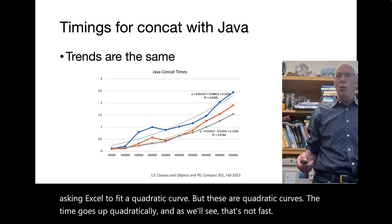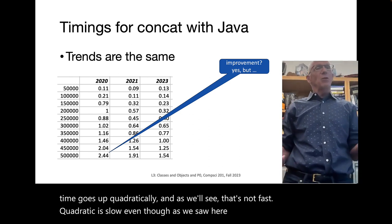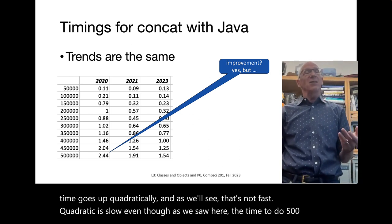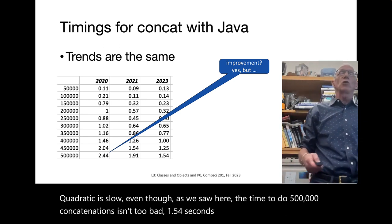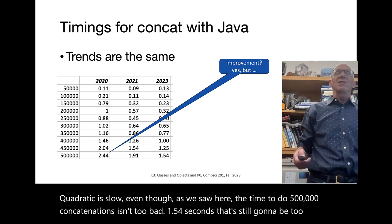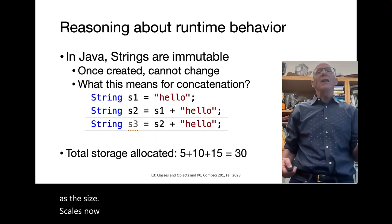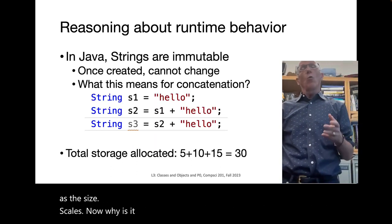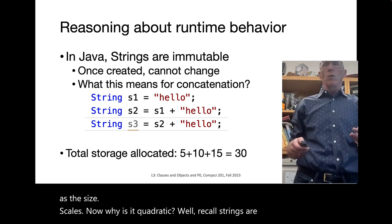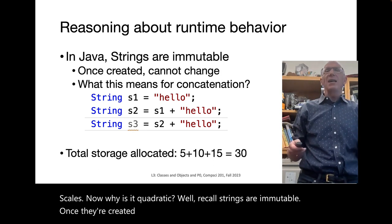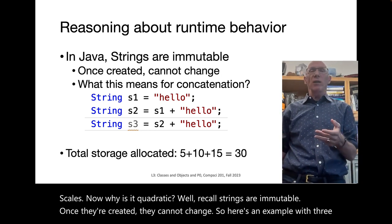The time goes up quadratically, and quadratic is slow. Even though 500,000 concatenations takes only 1.54 seconds, that's still going to be too slow as the size scales. Why is it quadratic? Recall: strings are immutable. Once they're created, they cannot change.